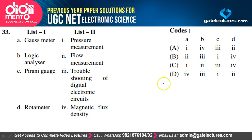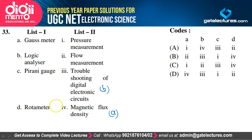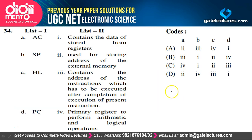Matching instruments: Gauss meter is used for measuring magnetic flux density (A→4). Logic analyzer is used for troubleshooting digital electronic circuits (B→3). Pirani gauge is for pressure measurement (C→1). Rotameter is for flow measurement (D→2). Option D is the correct option.